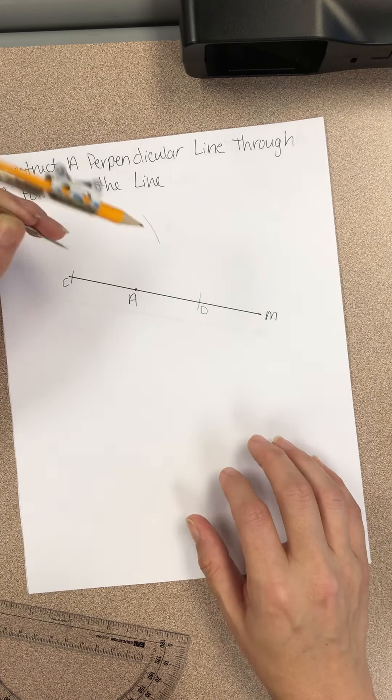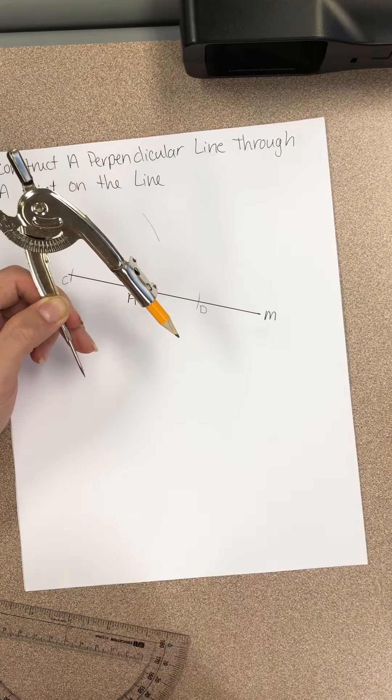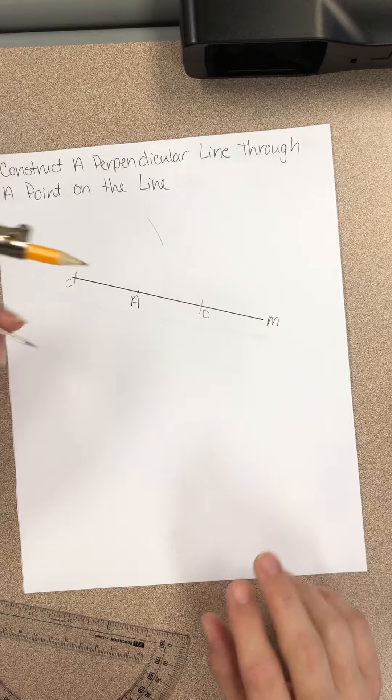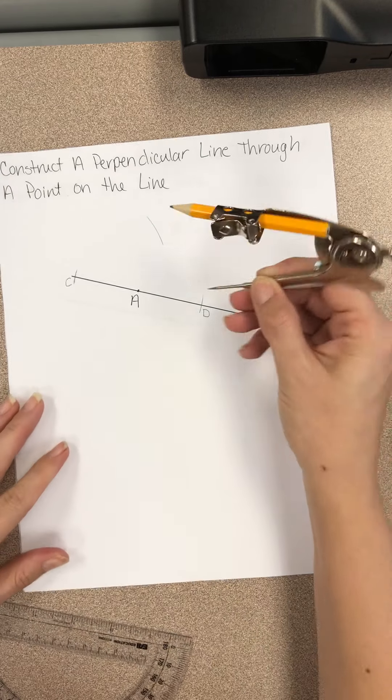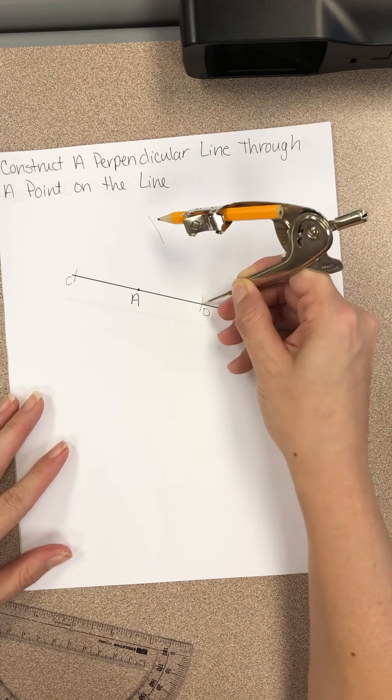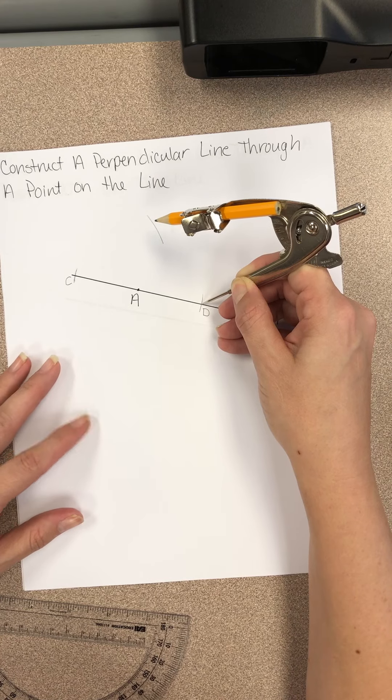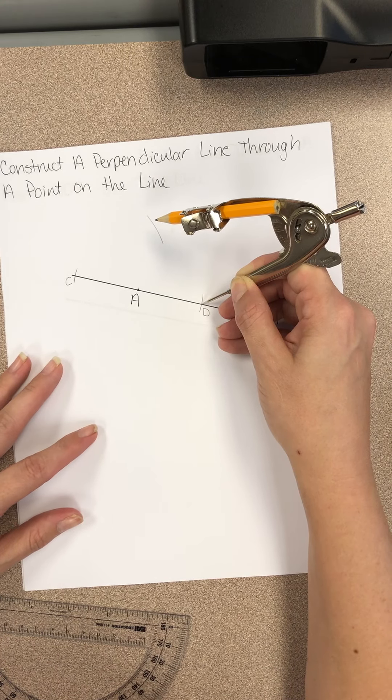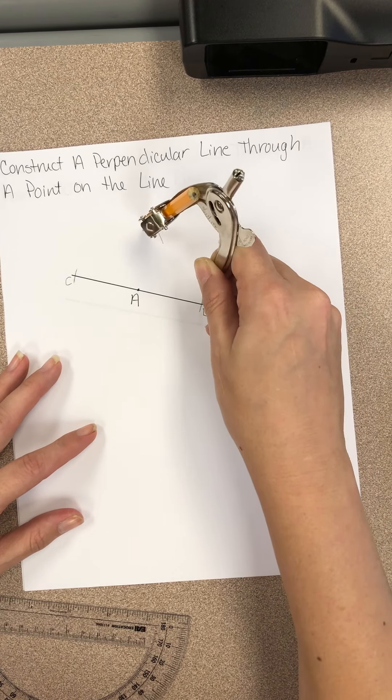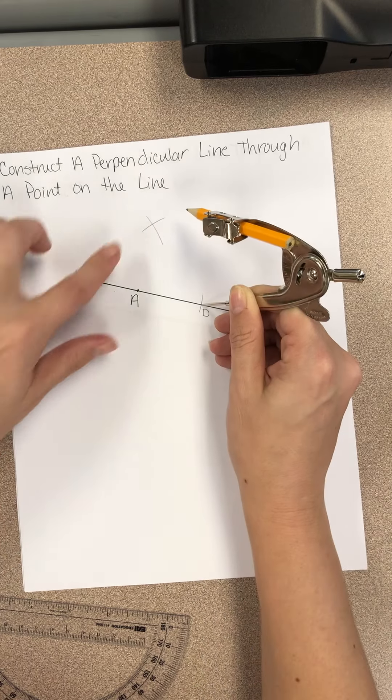Then it tells you, without changing the size, so don't change this, keep it the same, place the needle on point D and make a mark above A so that it intersects the arc from step two. So we're going to make an arc here so that they cross.